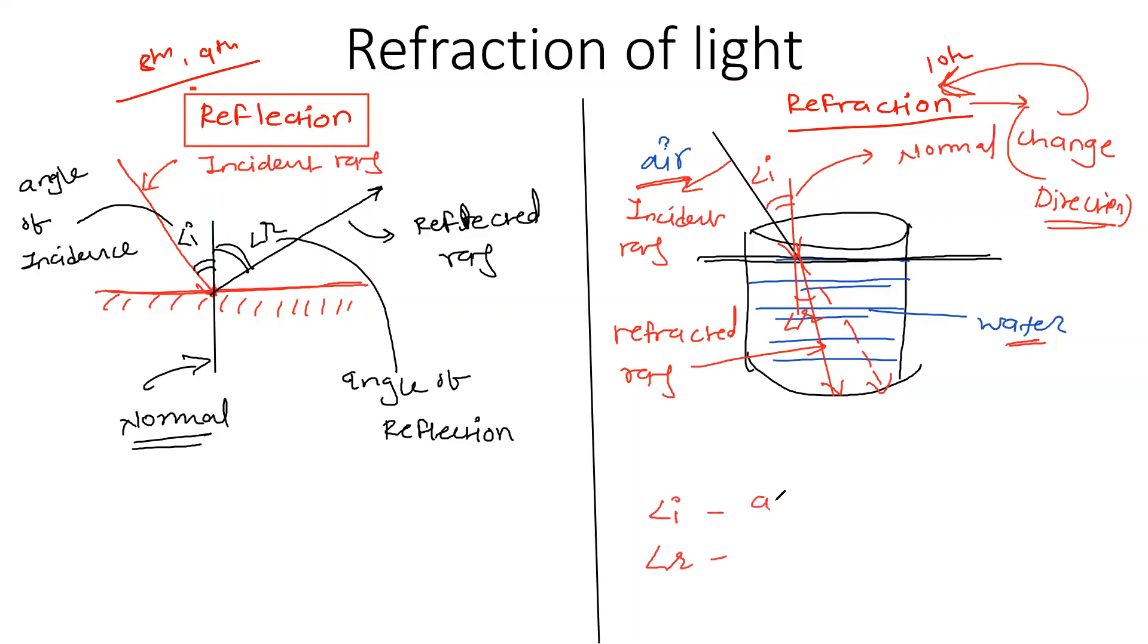And what is angle R? Angle of refraction. So this is the difference between reflection and refraction. We will study in the next lecture onwards refraction in detail, and how the pencil appears like this, or the coin appears to work like this. This happens due to refraction. So we will study this in the next lectures.